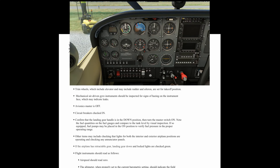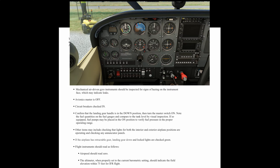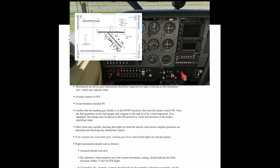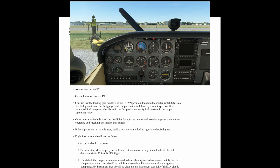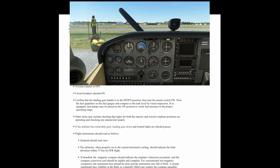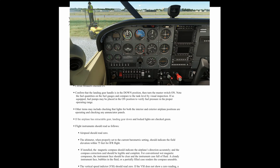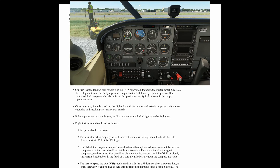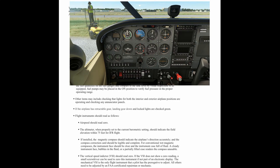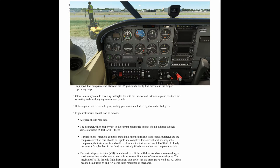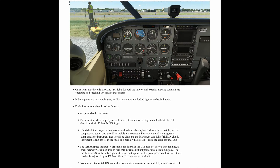Other items may include checking that lights for both the interior and exterior airplane positions are operating, and checking any annunciator panels. If the airplane has retractable gear, the landing gear down-and-lock lights are checked green. Flight instruments should read as follows: Airspeed should read zero. The altimeter, when properly set to the current barometric setting, should indicate the field elevation within 75 feet for IFR flight. If installed, the magnetic compass should indicate the airplane's direction accurately, and the compass correction card should be legible and complete. For conventional wet magnetic compasses, the instrument face should be clear and the instrument case full of fluid. A cloudy instrument face, bubbles in the fluid, or a partially filled case renders the compass unusable. The vertical speed indicator should read zero. If the VSI does not show zero reading, a small screwdriver can be used to zero this instrument if not part of the electronic display. The mechanical VSI is the only flight instrument that the pilot has as a prerogative to adjust.